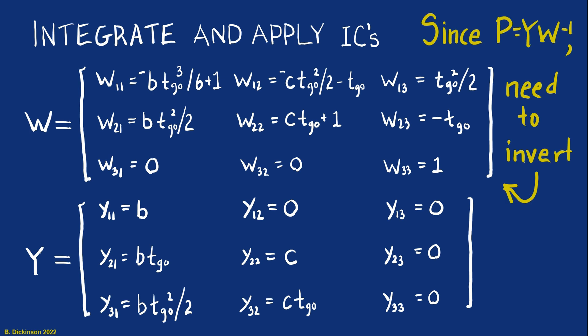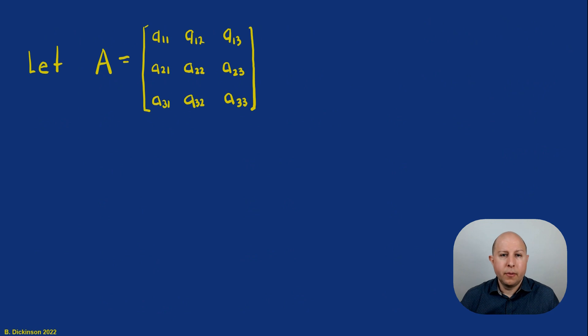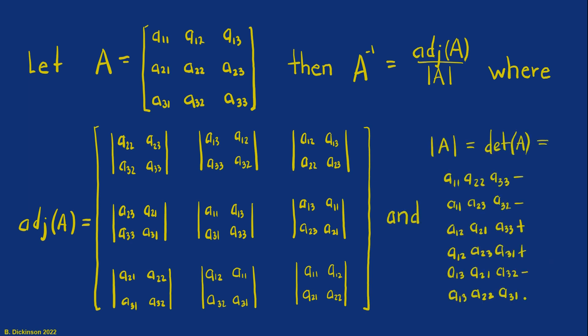Okay, we have Y. We have W. To determine P, we just need to invert W. Let's recall matrix inversion by cofactor expansion. So if we have a general 3x3 matrix, A, then we can determine its inverse as its adjoint over its determinant. Here's our adjoint matrix. It's comprised of the minors. They're determinants that then result in the cofactors and also our determinant.